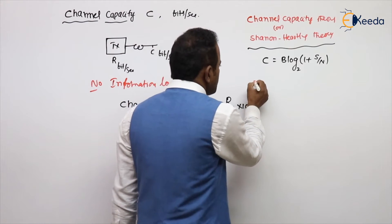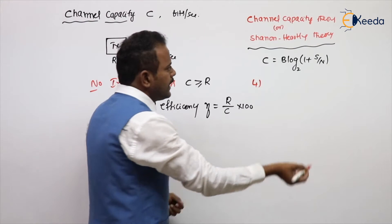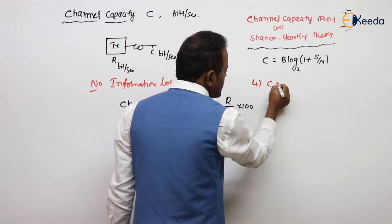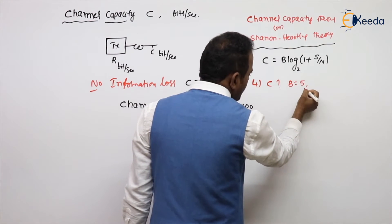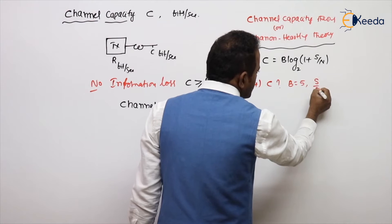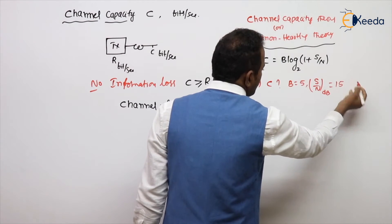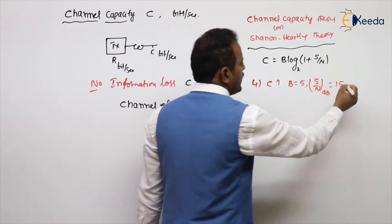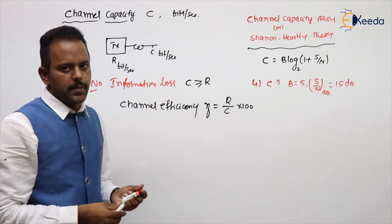Let us take a simple problem for your clarity. Calculate the capacity of a channel if bandwidth is given 5 kHz and signal to noise ratio value in decibels is given 15 dB.